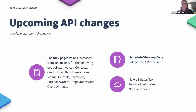In terms of recent API changes, the most notable one is the increase in page size for paging from 100 to 1000 for some of our endpoints. I know paging is very useful as a developer, so it's great that we've been able to expand that. That change applies to invoices, contacts, credit notes, bank transactions, manual journals, payments, purchase orders, prepayments, and overpayments. I'd encourage you to make use of that if you're accessing data from those endpoints.